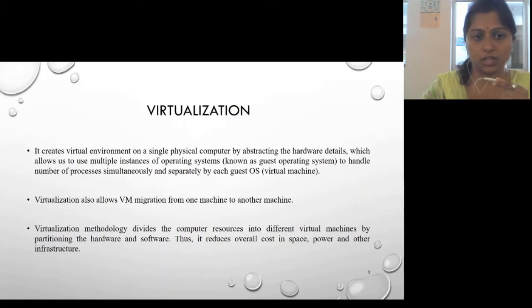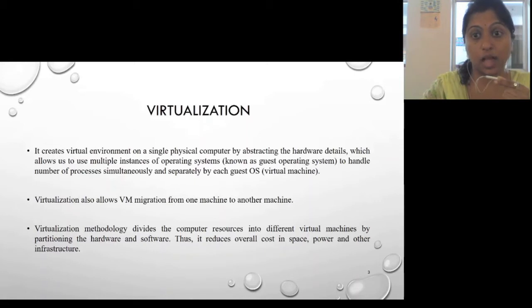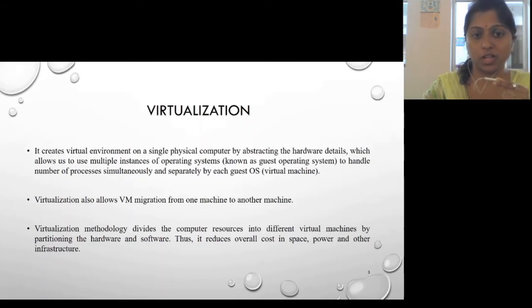Virtualization creates a virtual environment on a single physical computer, abstracting hardware details, which allows us to use multiple instances of an operating system. It helps us create a virtual machine. Virtualization also allows VM migration from one machine to another. It divides computer resources into different machines by partitioning hardware and software, thus reducing the overall cost in space, power, and other infrastructure.